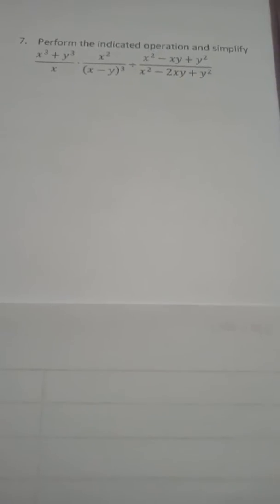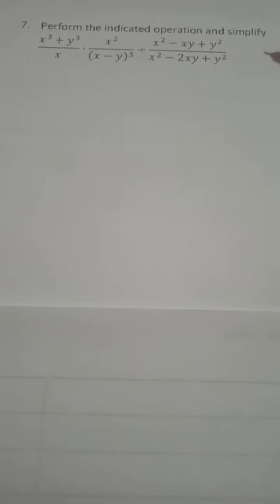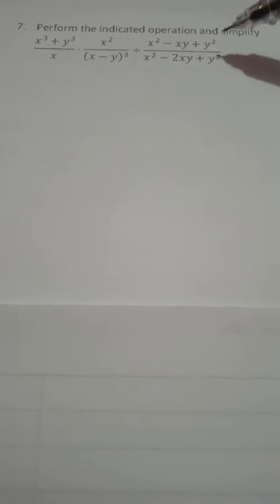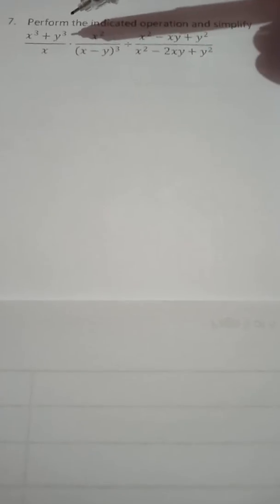We have here problem number 7. So we're going to perform the indicated operation and simplify. In order to simplify this kind of problem, first you need to find the factor for each numerator and denominator.